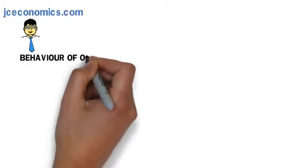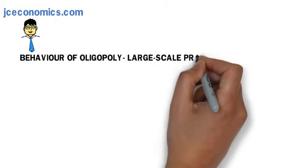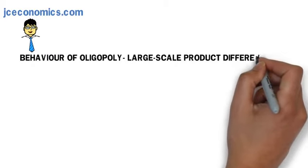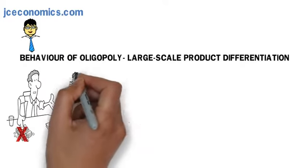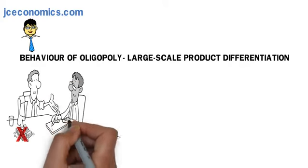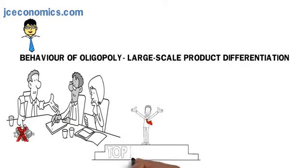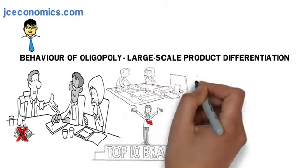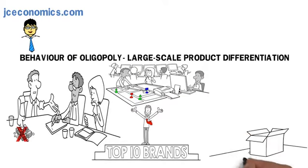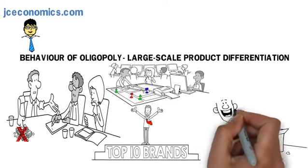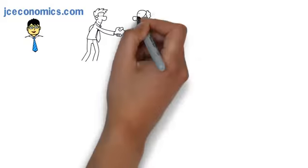Behavior of oligopoly: large-scale product differentiation. Oligopolies engage in non-price competition, such as through brand proliferation, marketing promotions, and product development, to reduce substitutability, reinforce consumer loyalty, and increase their market share.